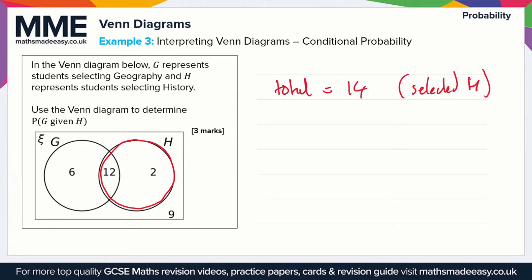And we want to know the probability that the student selects geography given that they selected history. So the number of people that selected geography as well as history is 12, so P of G given H we can say is 12 over 14.